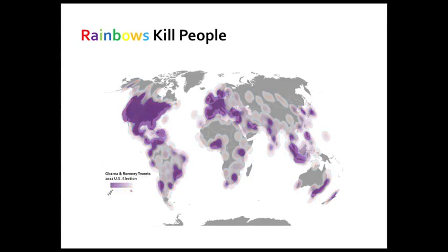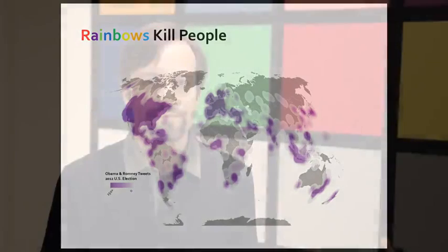Contrast that to this map, which just shows less to more purple. This is the appropriate way to deal with this kind of data. I'm showing density, so I just want to show less to more of one color. Now I can see right away where I don't have as many tweets and where I have lots of tweets. Rainbows kill people — stop using them.